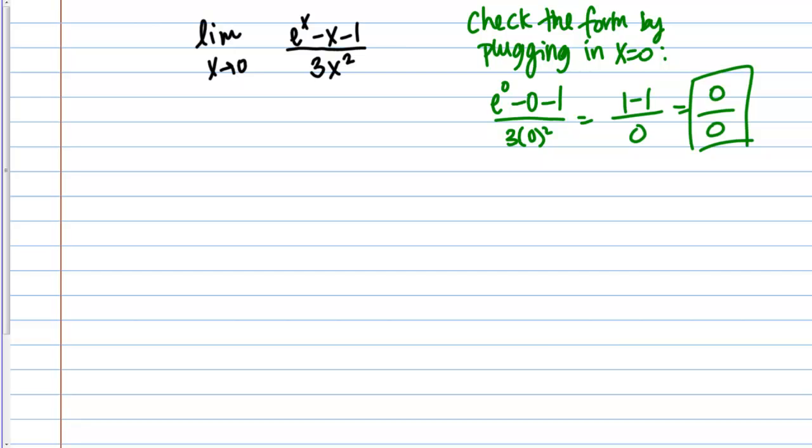0 over 0 is an indeterminate form that tells me I have to do some more algebra or some more work of some sort to figure out the answer to the limit. In the past, when we've come across these indeterminate forms, we've done things like factoring or maybe multiplying by the conjugate or finding a common denominator. All sorts of different algebraic tricks to rewrite the limit.